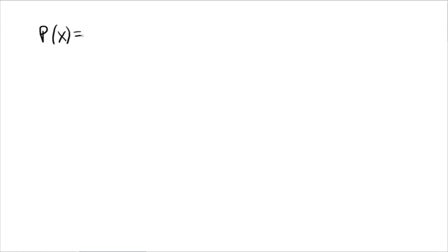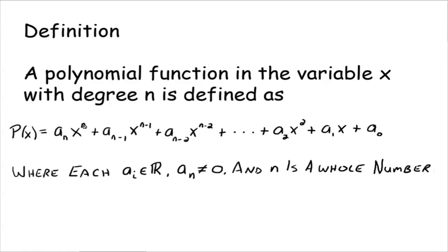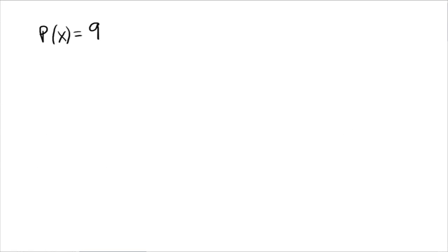The first one would be P of x equals 9 — that's really just y equals 9. The degree n here is 0. This is called the constant function, n equals 0.